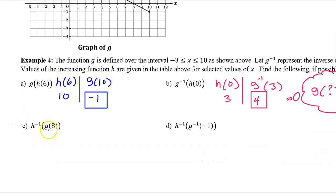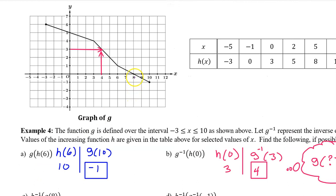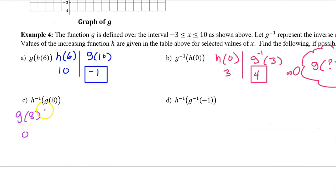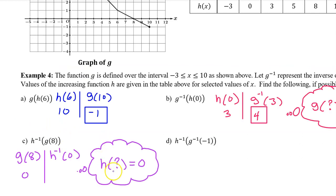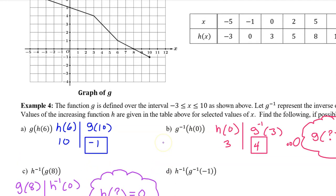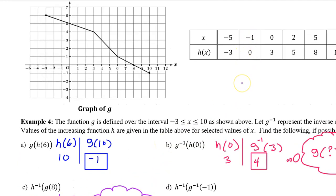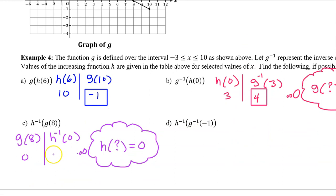Part C: working from the inside out, we begin with g at 8. g at 8 is 0. Moving to the outside, we must now evaluate h inverse at 0. But we don't have h inverse. So we must ask ourselves: h at what is equal to 0? h at negative 1 is equal to 0. So that's the answer.